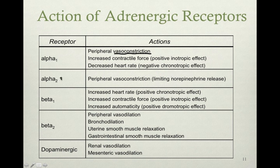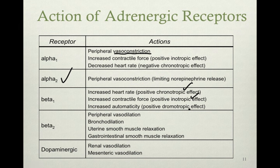We'll see medications that are specifically alpha-2 stimulants or agonists. Beta-1 increases heart rate, contractility, and automaticity — automaticity being the speed or velocity of electrical firing. So the heart becomes harder, faster, and stronger. Note the terms chronotropic and inotropic, as they appear frequently in drug definitions later on.